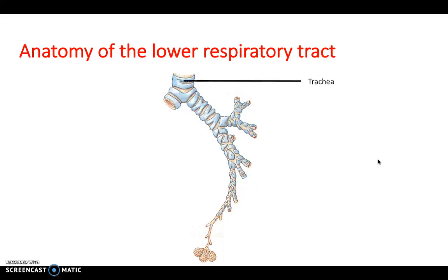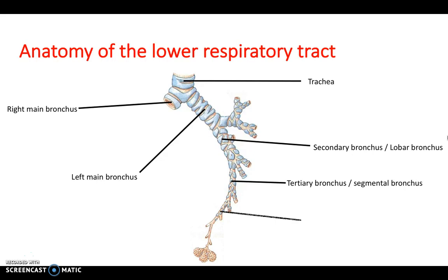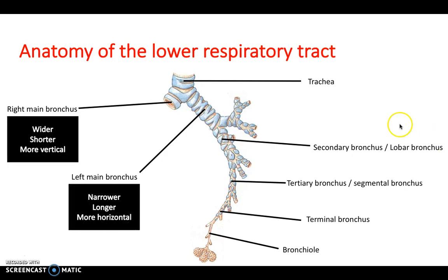In terms of airway divisions: the trachea bifurcates at the carina at T5 into the right and left main bronchi. From the main bronchi, further bifurcation gives secondary or lobar bronchi, then tertiary or segmental bronchi, then terminal bronchioles, and finally the bronchioles and alveoli. Anatomically, the right bronchus is wider, shorter, and more vertical — making it more likely to have a foreign object lodged in it if inhaled.